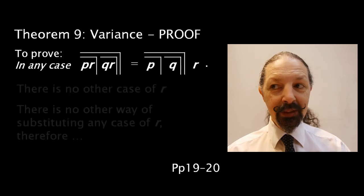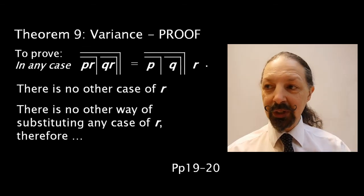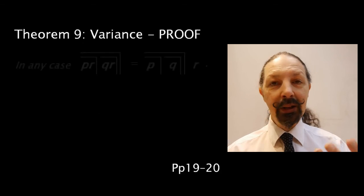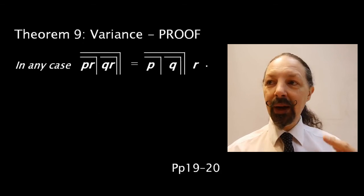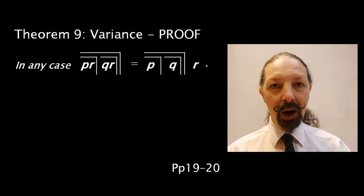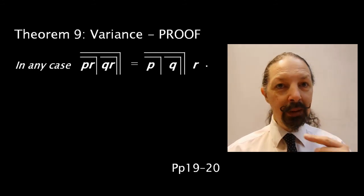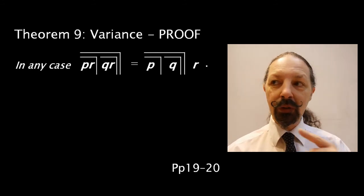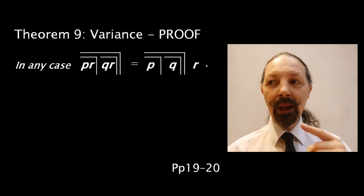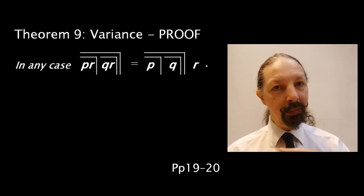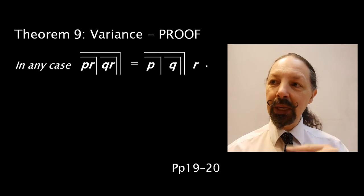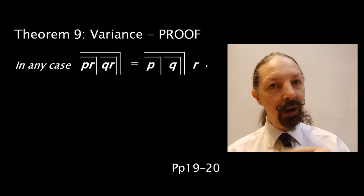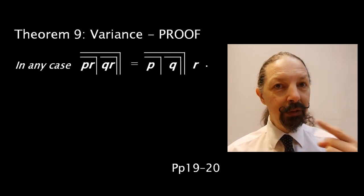There is no other case. There is no other way of substituting any case of r. So, in any case, say it with me. P r mark over 2 q r mark over 2 mark over 2 equals p mark q mark mark over 2 r. And going the other way, p mark q mark mark over 2 r equals p r mark over 2 q r mark over 2 mark over 2.